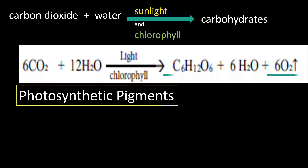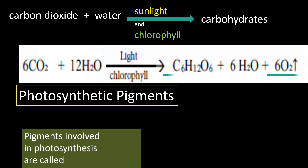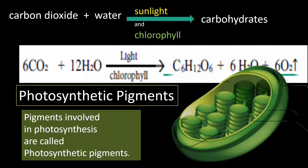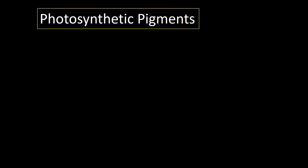Photosynthesis needs photosynthetic pigments. Chlorophyll is one of the photosynthetic pigments. Photosynthetic pigments are colored substances that collect sunlight. These pigments are found inside the chloroplast, specifically in the membrane of thylakoids.